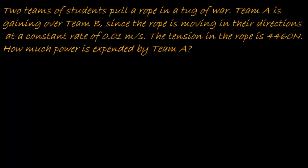A rope in a tug-of-war. Team A is gaining over Team B, since the rope is moving in their direction at a constant rate of 0.01 meters per second. The tension in the rope is 4,460 Newtons. How much power is expended by Team A?